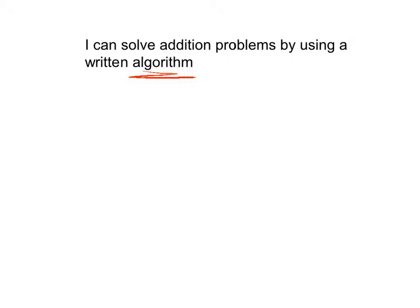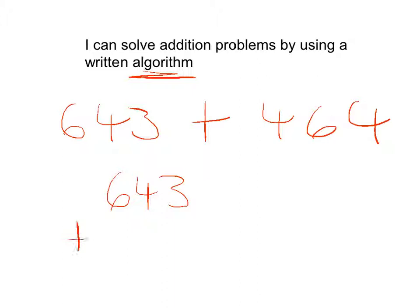So let's imagine we had the question 643 plus 464. Now, turning this into a written algorithm would turn it into this. 643 plus 463. And then we would solve this. This is what's called an algorithm. And we're going to be learning how to do these now. Let's take a look.